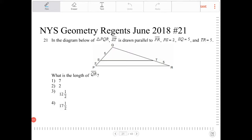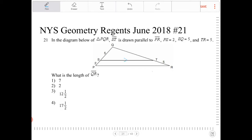In the diagram below of triangle PQR, ST is drawn parallel to PR. So ST is parallel to PR.